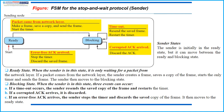The next state is the blocking state. When the sender is in this state, three events can occur. If a timeout occurs, the sender resends the saved copy of the frame and restarts the timer. If a corrupted acknowledgement arrives, it is discarded. If an error-free acknowledgement arrives, the sender stops the timer and discards the saved copy of the frame, then moves to the ready state again.